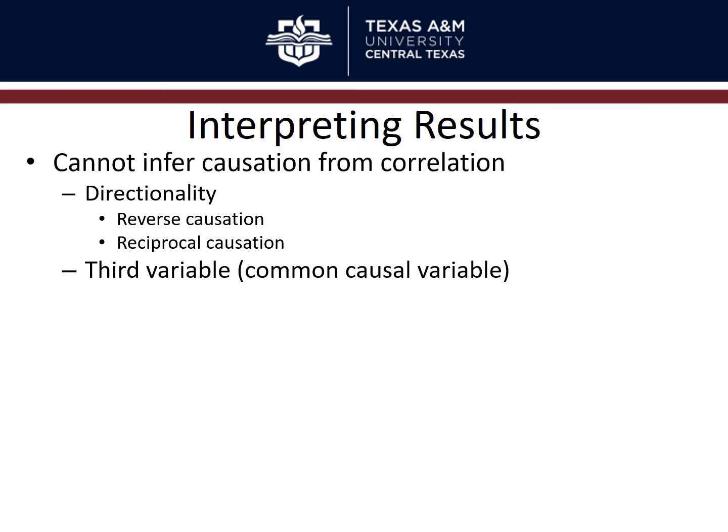The second reason you can't infer causation is the third variable problem — also called the common causal variable problem. There's a relationship between A and B only because some third variable explains it. For example, there may be a correlation between number of ashtrays someone owns and number of household members diagnosed with cancer. But clearly ashtrays don't cause cancer — smoking is the common causal variable. Smoking causes more ashtrays and causes higher cancer rates. A and B look related but are both being affected by the third variable.